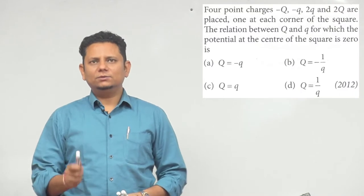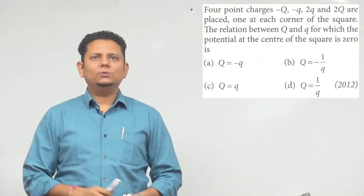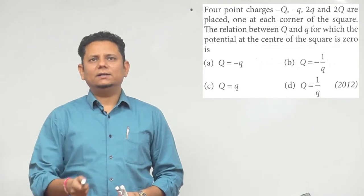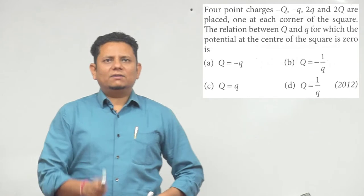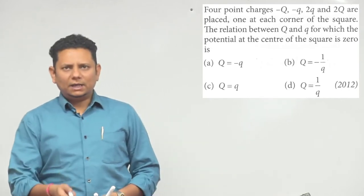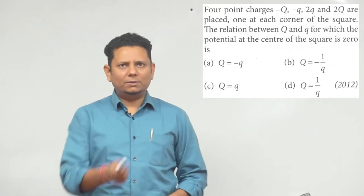Next question, 12-12. The question says four point charges minus capital Q, minus small q, 2 small q, and 2 capital Q are placed one at each corner of the square. Find the relation between capital Q and small q for which the potential at the center will be equal to zero. We have four options.